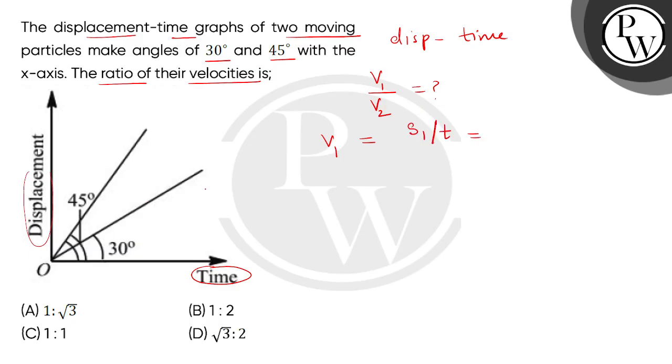And then, the second particle can write V2 is S2 divided by T, which will represent slope number 2. Now, the first angle given is 30 degree.